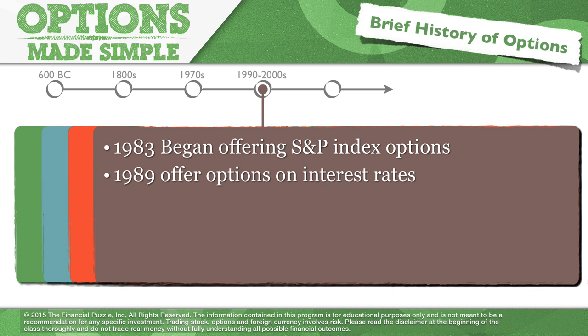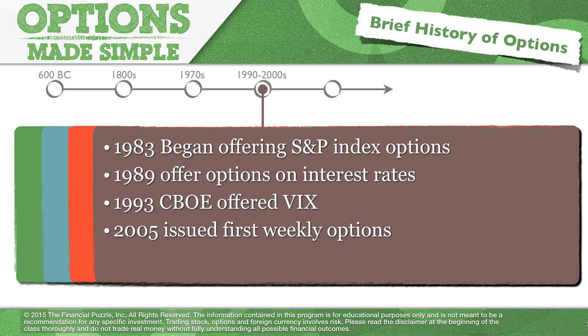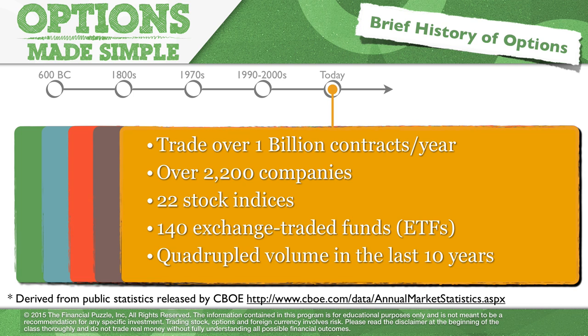And then the history of options trading started to accelerate from there, and it has just been ripping and roaring since then. So let's move forward to 1983. They began offering S&P index options. By 1989, they started offering options on interest rates. By 1993, CBOE started offering VIX. It was in 2005 when they started offering the weekly options. That's when they first issued out weekly options. And then moving forward, here we are today. And currently, the world of options trades over one billion contracts a year. That is a lot of options that get traded. There's over 2,200 companies. That's a pretty short history. So from 1973, starting with 16 companies, today, over 2,200 companies trade options. There's 22 stock indexes. There's over 140 exchange traded funds now. And they've quadrupled in volume over the last 10 years.